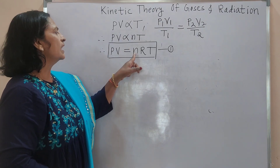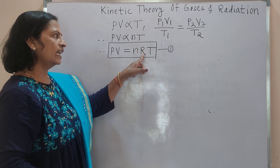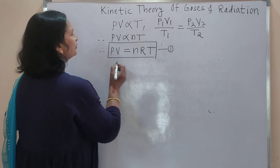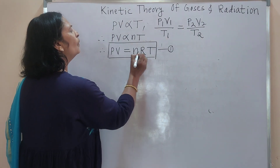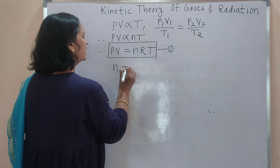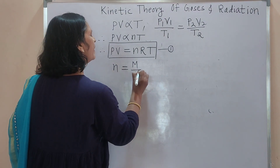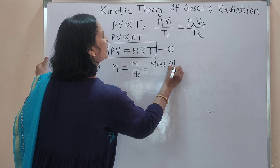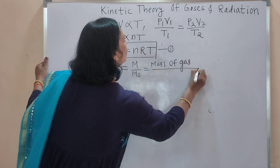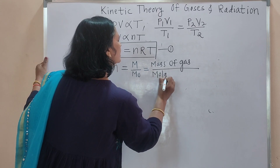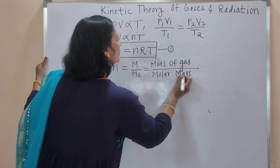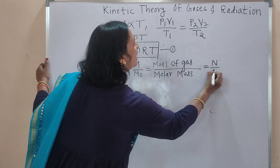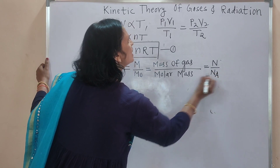In this equation, N is the number of moles, R is the universal gas constant, and T is the absolute temperature of the gas. We calculate number of moles as N equals M divided by M0, where M is mass of gas and M0 is molar mass of gas — meaning mass of 1 mole of a gas. This is also equal to N divided by NA.